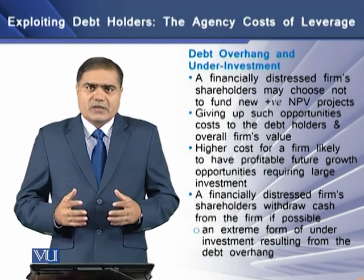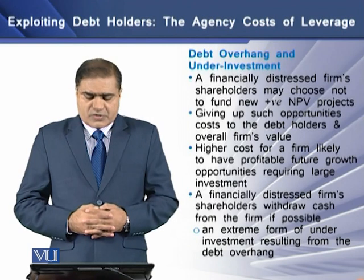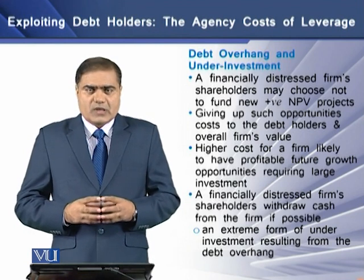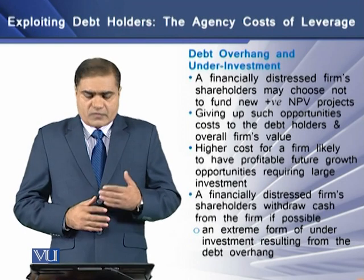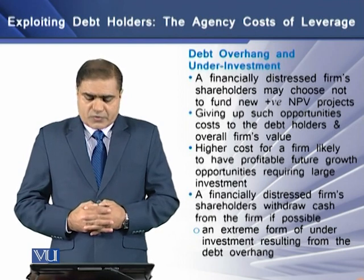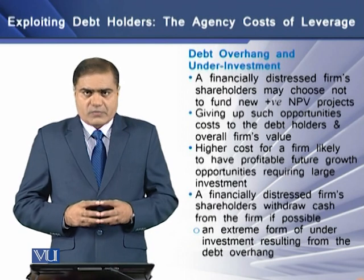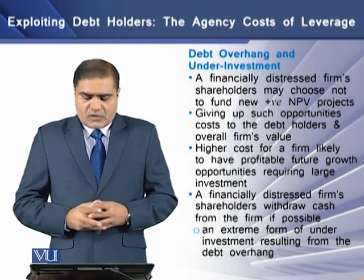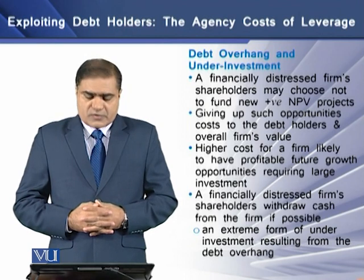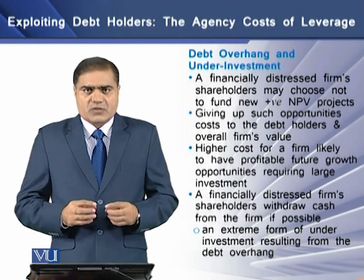What is the debt overhang and underinvestment problem? A financially distressed firm's stakeholders may choose not to fund new positive NPV projects — that is the phenomenon of debt overhang. Giving up such profitable opportunities is costly to debt holders and the overall firm's value. Firms with higher costs are likely to have profitable growth opportunities that require larger amounts of investment in the future. A financially distressed firm's shareholders may also withdraw cash from the firm whenever possible, a phenomenon termed as cashing out — an extreme form of underinvestment resulting from the debt overhang problem.